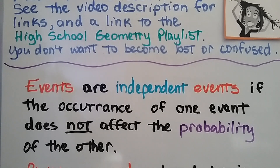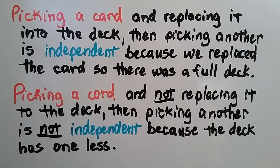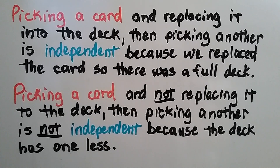Events are independent events if the occurrence of one of the events does not affect the probability of the other — they're independent of each other. Picking a card and replacing it into the deck, then picking another card, is independent because we replaced the card so there was a full deck again. But picking a card and not replacing it, then picking another, is not independent because the deck has one less card.